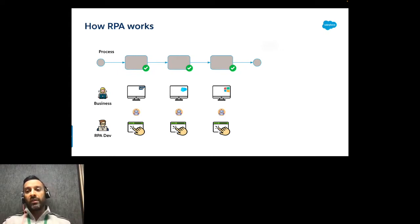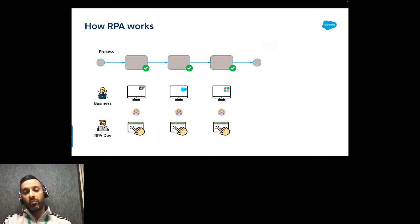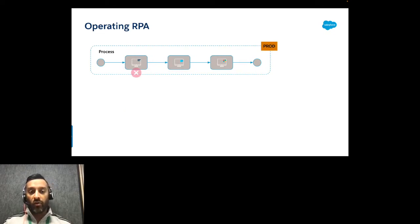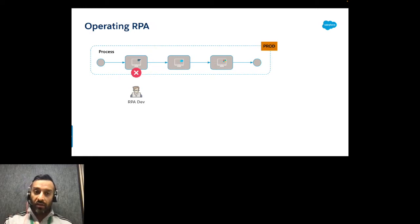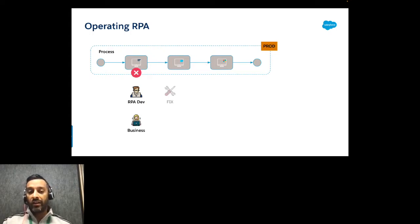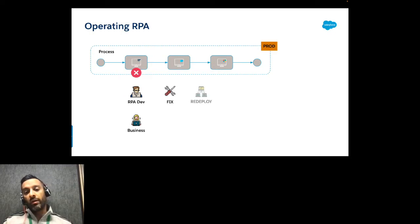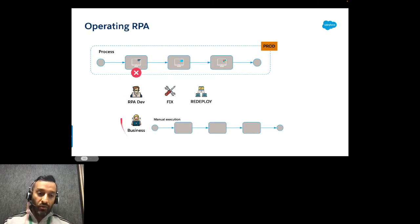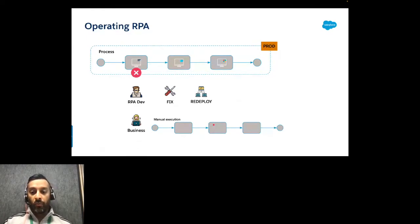Once the process is in production, two weeks later the SAP team deploys a new transport to the Sales & Distribution module. The automated process fails. The RPA developer gets the error but can't relate because the UI has changed. They must contact business to understand why, then together fix and redeploy. Meanwhile, business must manually complete the broken process.